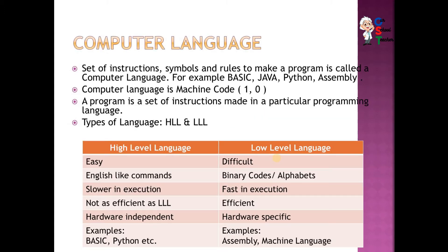So what is a computer language? A computer language is a set of instructions, symbols, and rules to make a program. Examples include BASIC language, Java language, Python language, and the language we are going to discuss — assembly language.